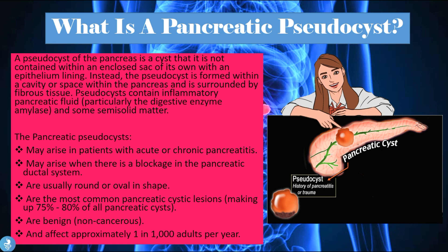Pancreatic pseudocysts may arise in patients with acute or chronic pancreatitis, or when there's a blockage in the pancreatic ductal system. They are usually round or oval in shape and make up the most common pancreatic cystic lesions — about 75 to 80% of all pancreatic cysts. They are benign, meaning non-cancerous, and affect approximately one in every 1,000 adults per year.